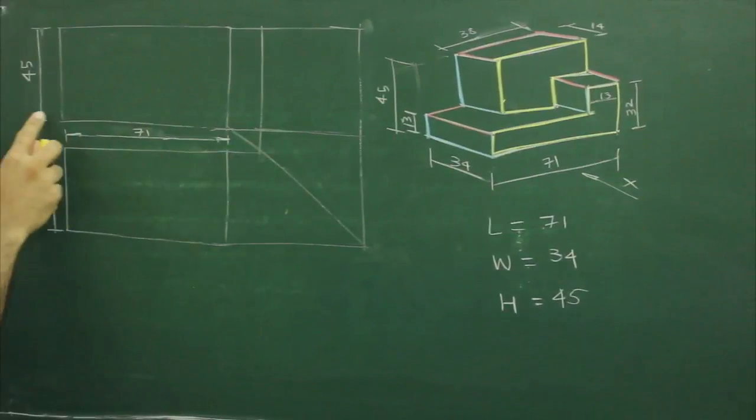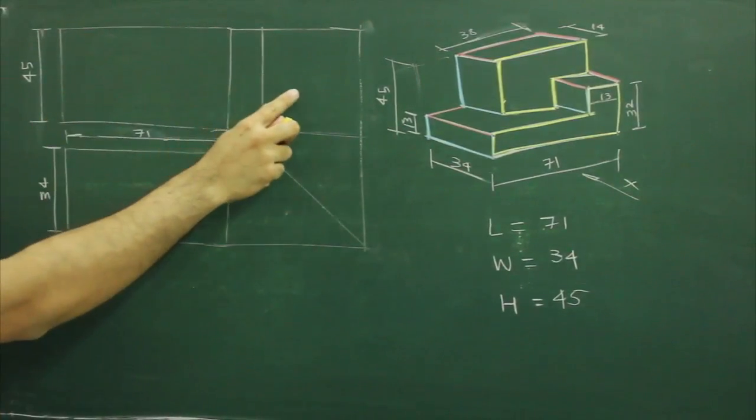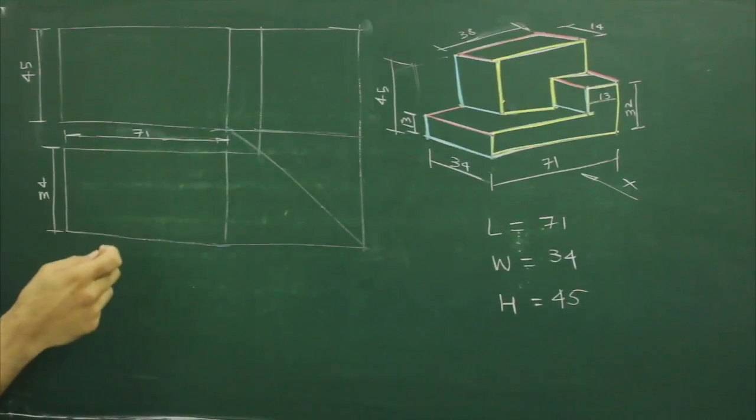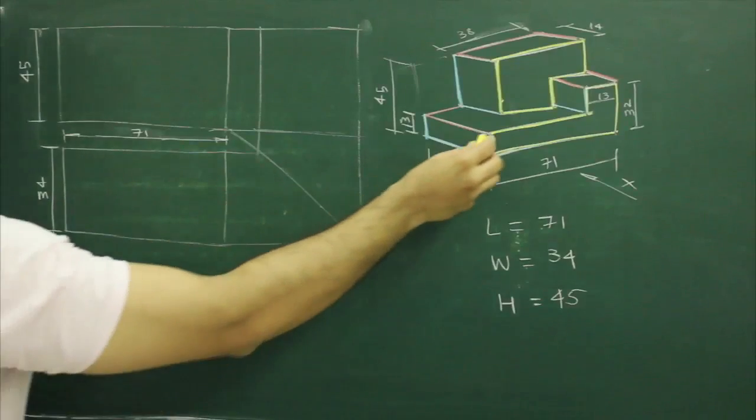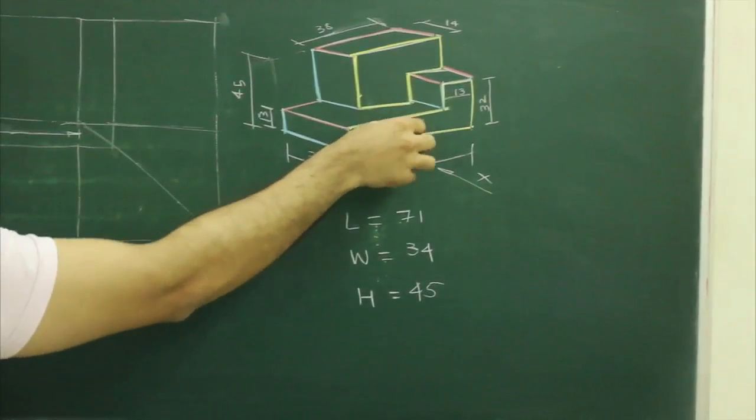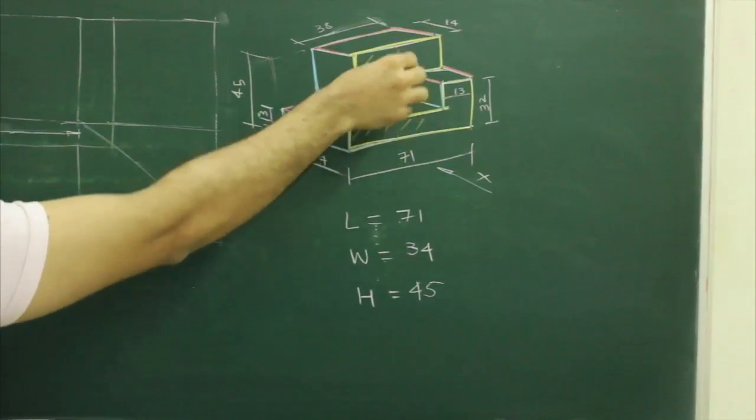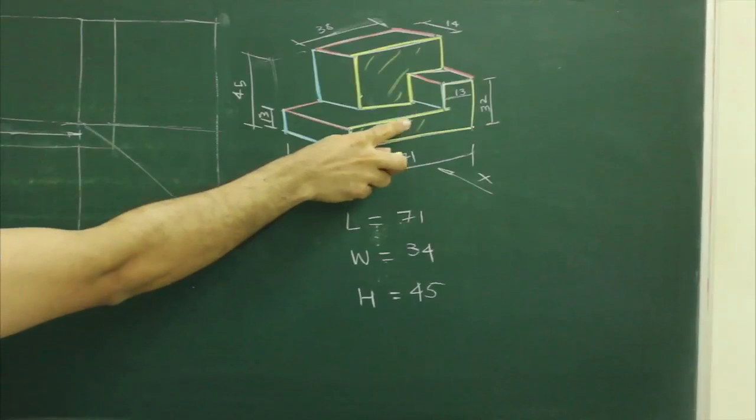So first we will draw layout of front view, top view and side view. Now to draw front view, first we will see this portion, after that we will see this portion. So first we will draw this and then this.